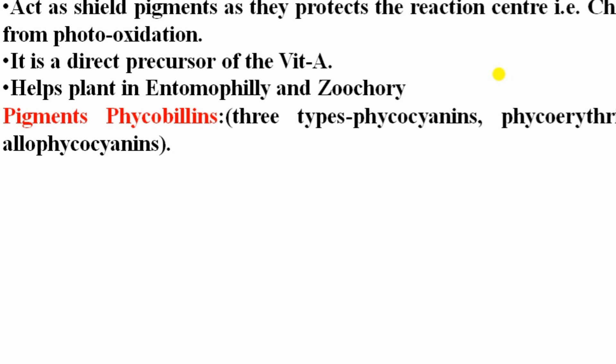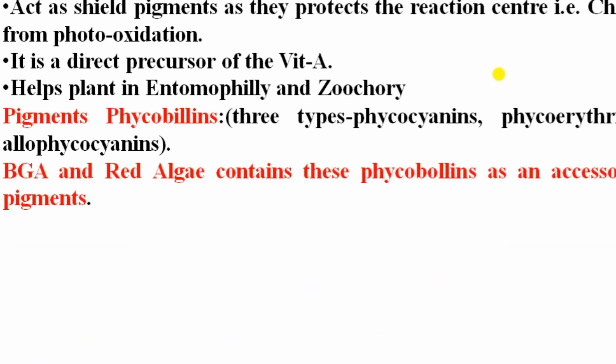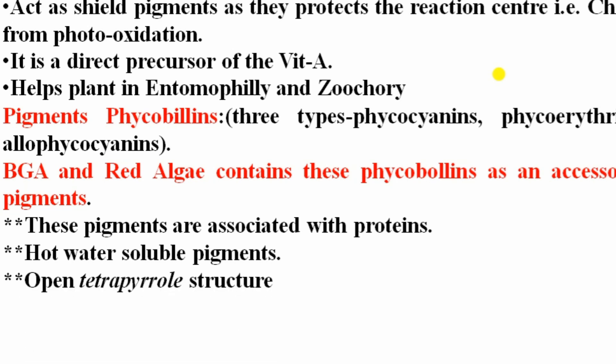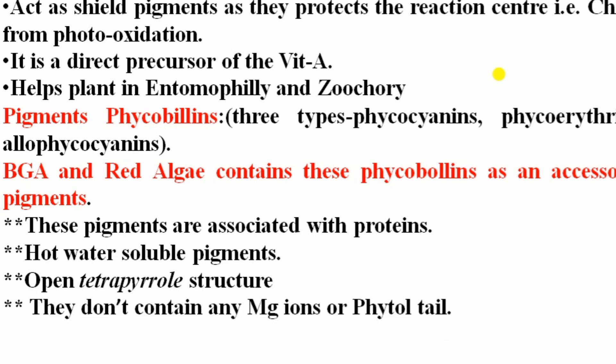Phycobilins are pigments found in blue-green algae and red algae as accessory pigments. There are three types: phycocyanin, phycoerythrin, and allophycocyanin. Unlike carotenoids, phycobilins are hot-water-soluble, are associated with proteins, and have an open tetrapyrrole structure — meaning they contain no magnesium ion and no phytol tail.